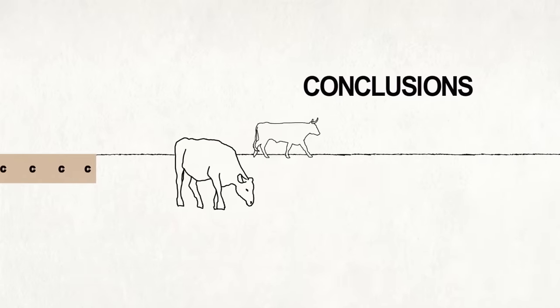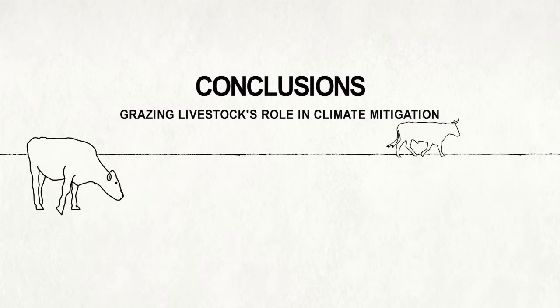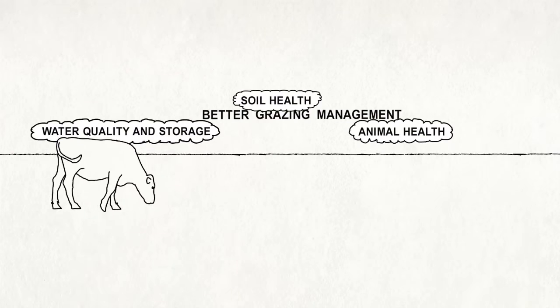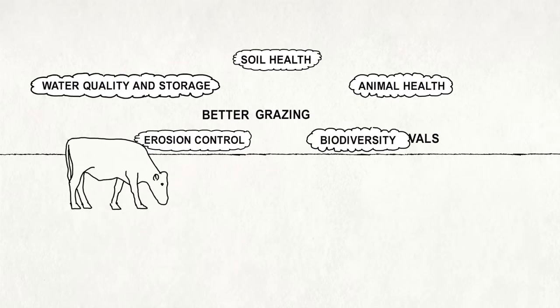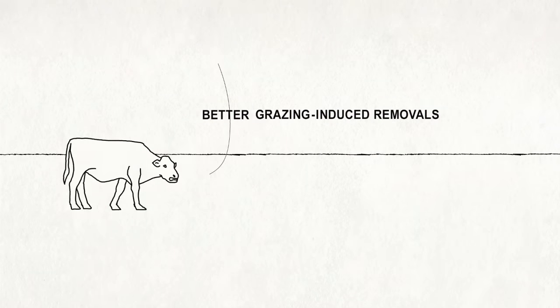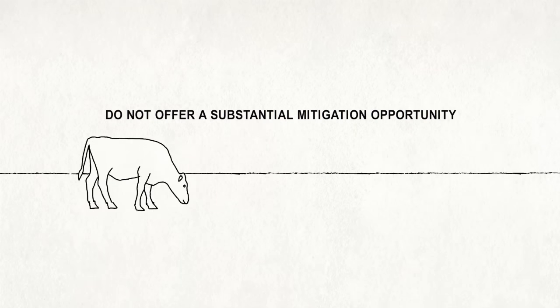So, what conclusions can we draw about grazing livestock's role in climate mitigation? Better grazing management is certainly worthwhile for many reasons. But grazing-induced removals via soil carbon sequestration do not offer a substantial mitigation opportunity.